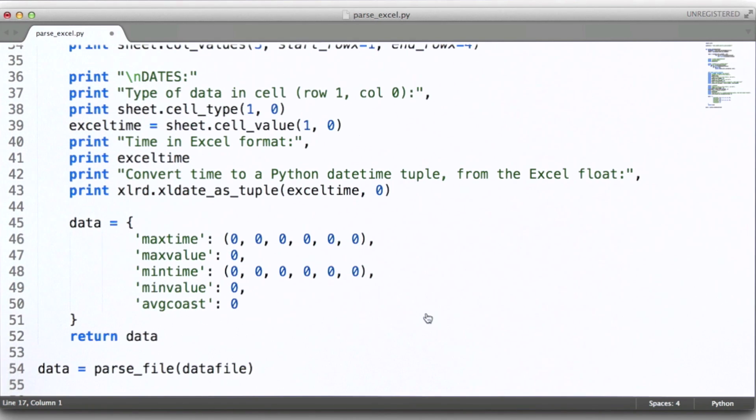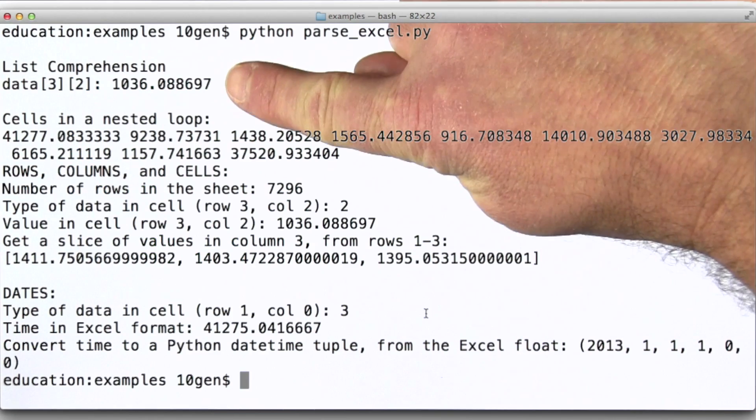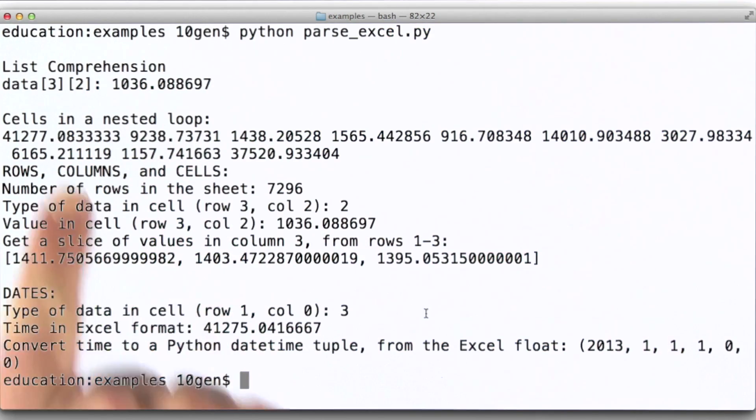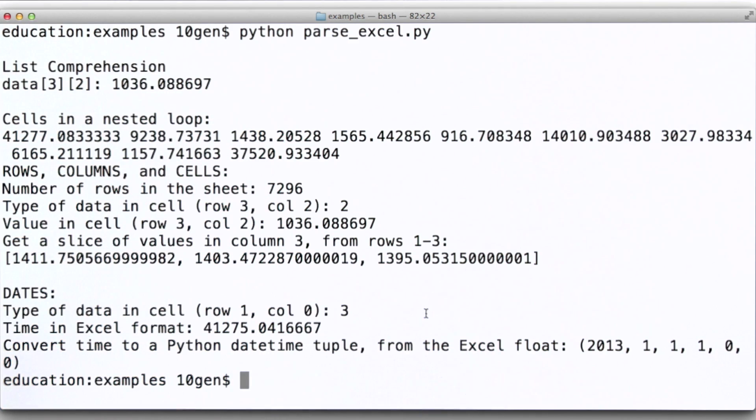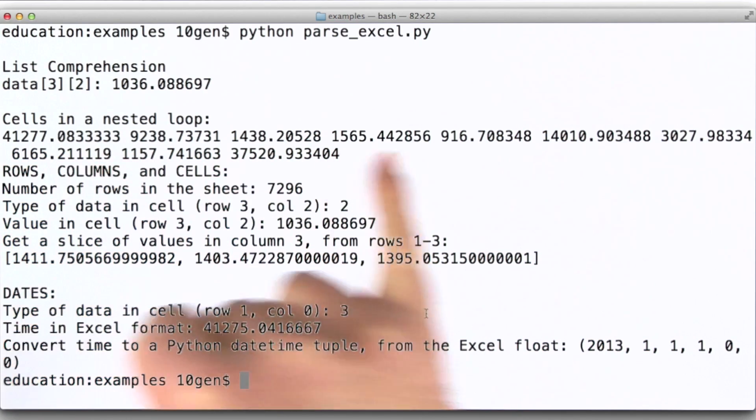Let's go look at that output one more time. So here's our list comprehension. We're simply printing out the value at row three, column two, from the list into which we read all of the Excel data. So here we can see where I was looping through the rows and columns and printed out all of the values on row 50.